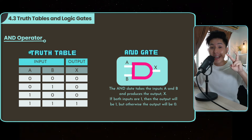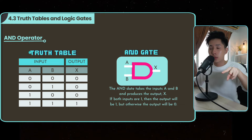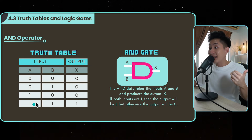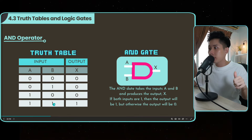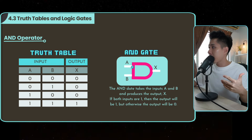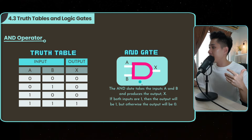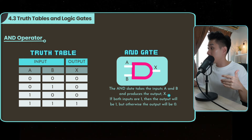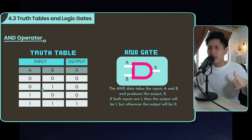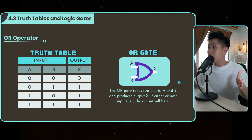The AND operator requires two conditions to be true for the output to be true. In the truth table, only when A and B are both 1 — where 1 stands for true — will you get an output of 1. This is the symbol for the AND gate, which is slightly curved. The AND gate takes inputs A and B and produces output X. Only if both inputs are 1 will the output be 1; otherwise the output is 0. You don't need to memorize the truth table — just understand what an AND gate does and you can produce the result.